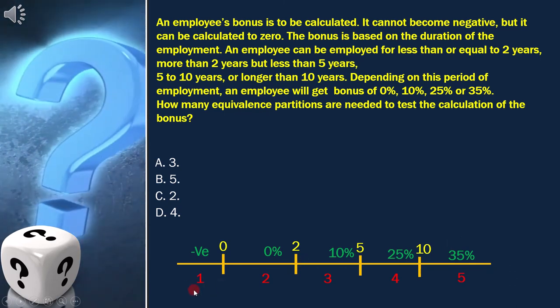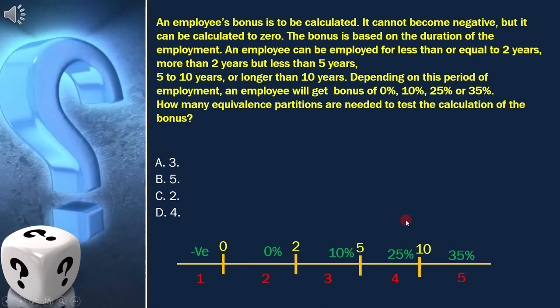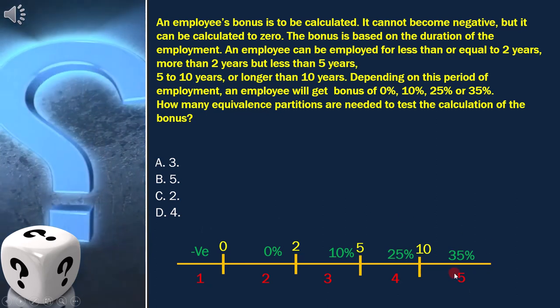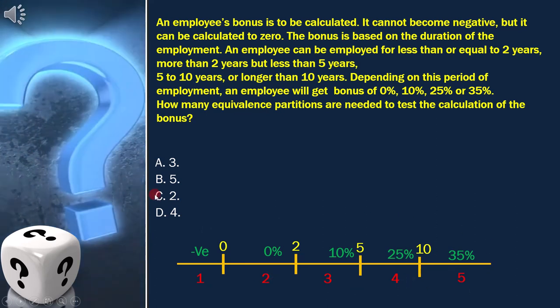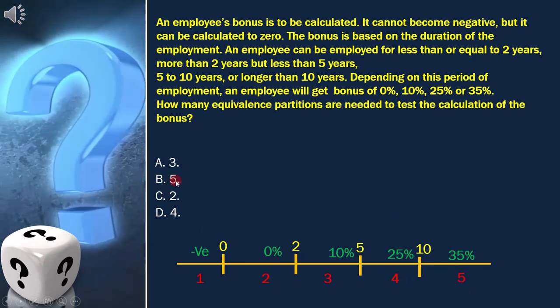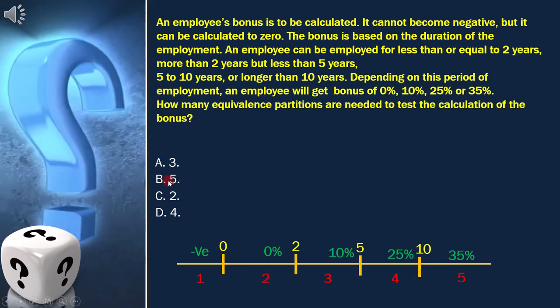We can see that we have five equivalence partitions, therefore option B is the answer.